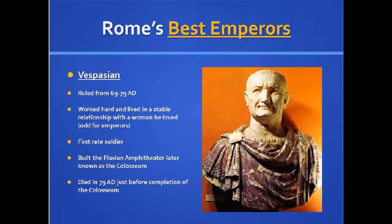Another popular Roman emperor was Vespasian, who ruled 69 to 79 AD. He worked hard and lived in a stable relationship with a woman he loved, which was very unusual — emperors typically had many women for political reasons. He was considered a first-rate soldier, very smart and knowledgeable. He built the Flavian Amphitheater, later known as the Colosseum. Unfortunately, he died in 79 AD before the Colosseum's completion — about a year and a half to two years before it ended up opening.